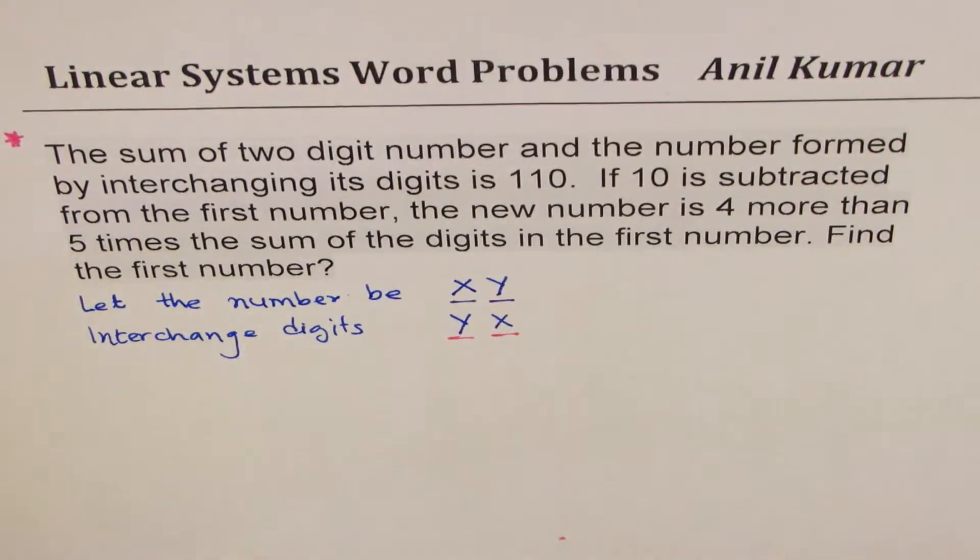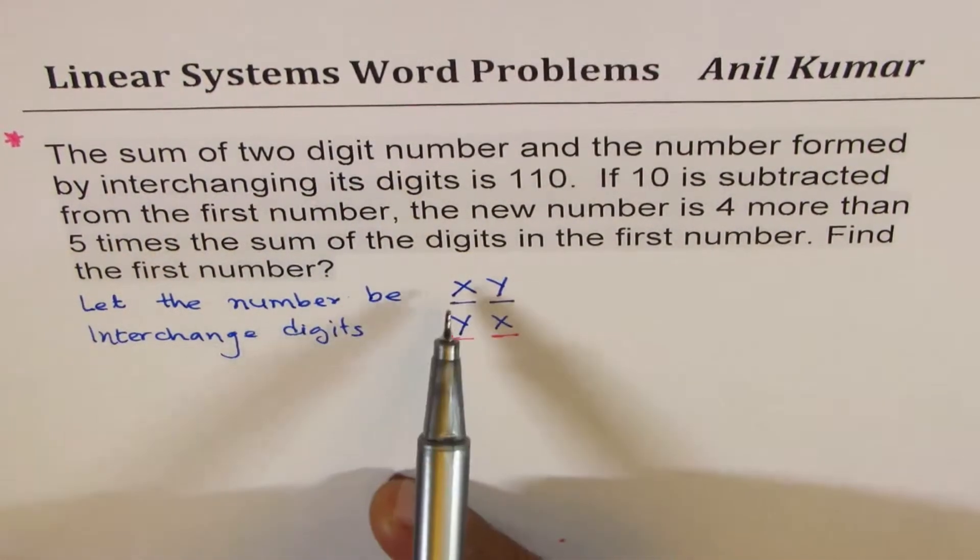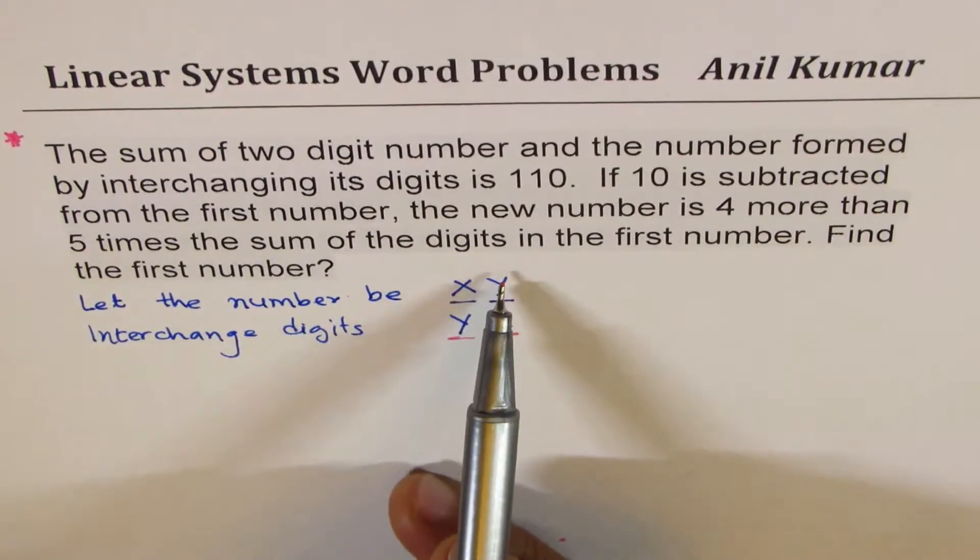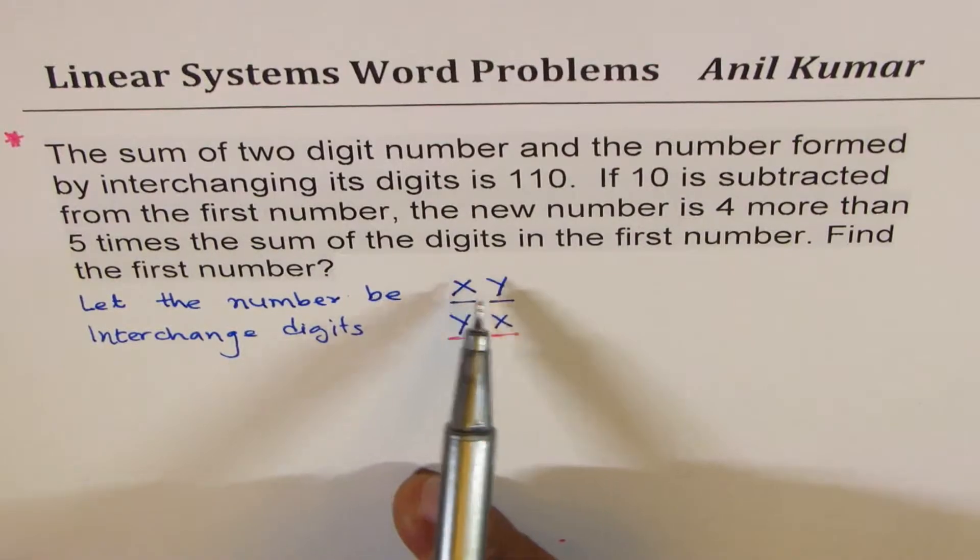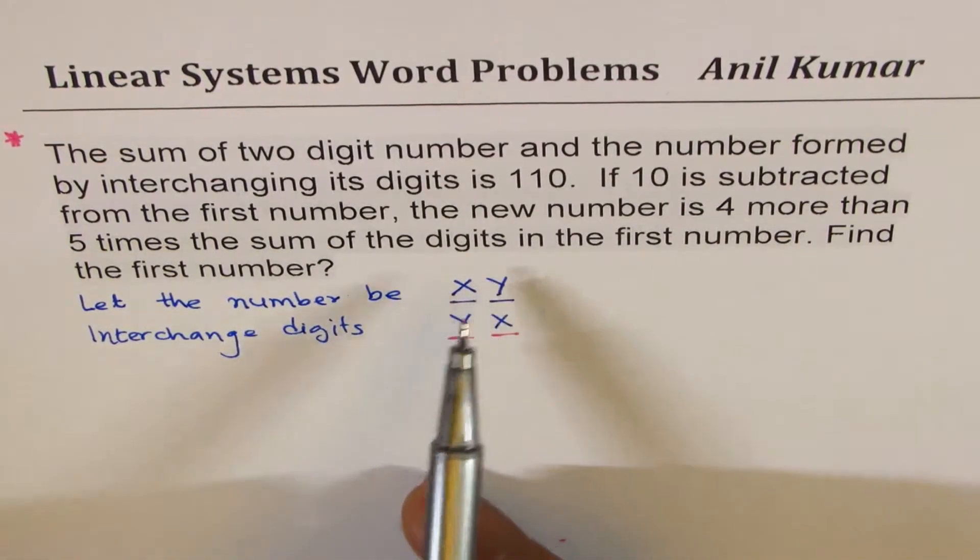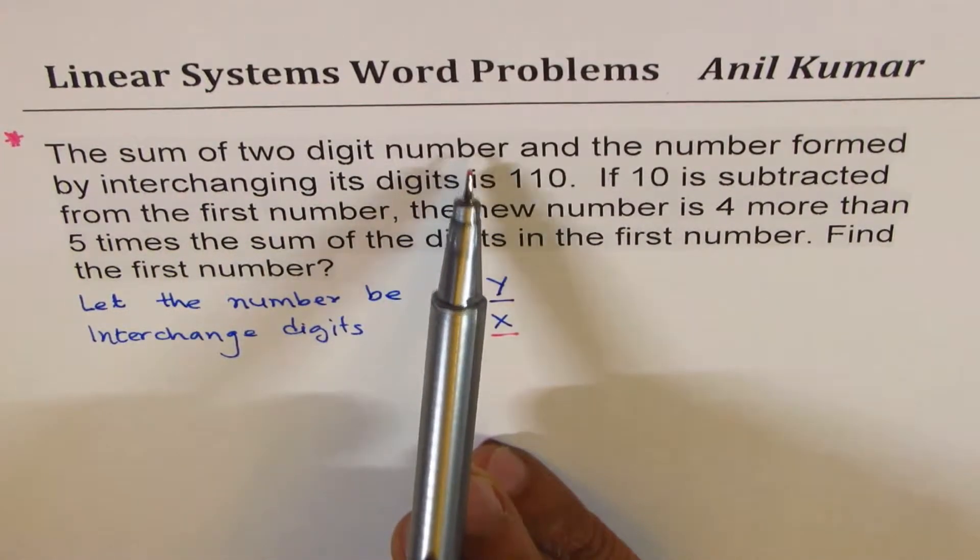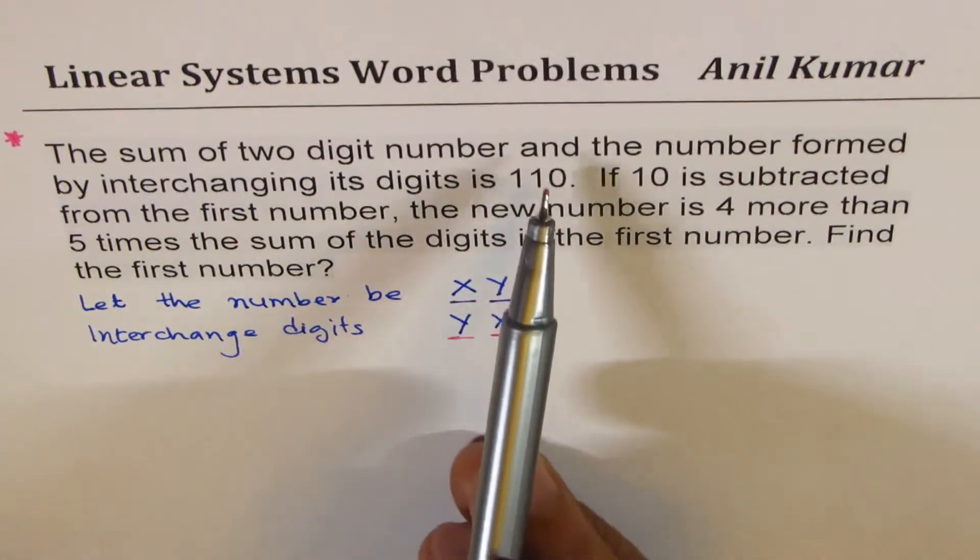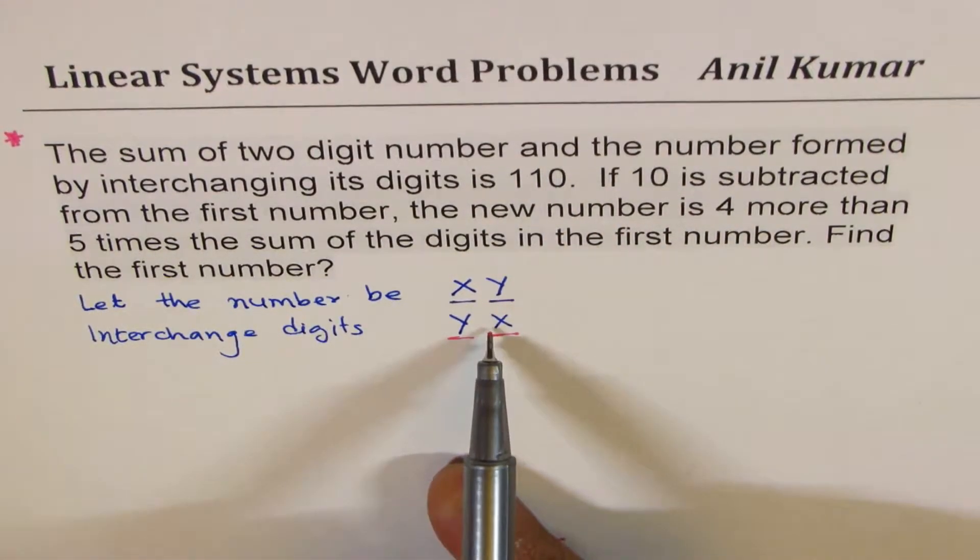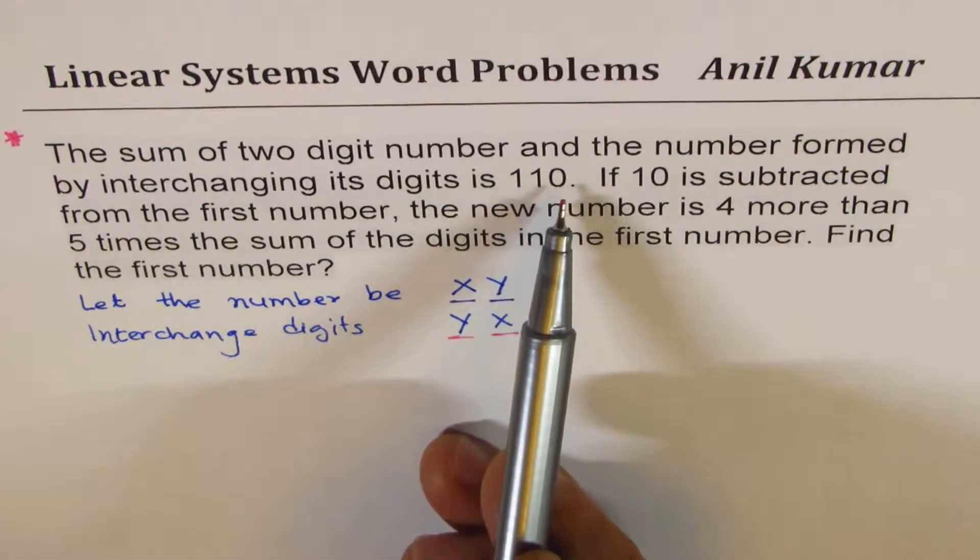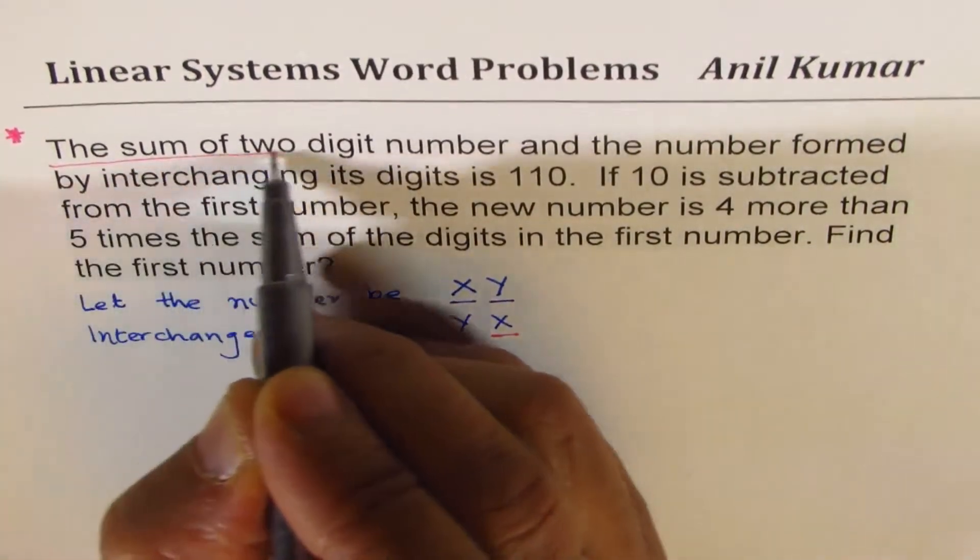Now does that help you? So it says the sum of two digit number, let's say this is 35. So 30 means 3 times 10 and 5. So it says the sum of two digit number, that means sum of this and the number formed by interchange that is 110.